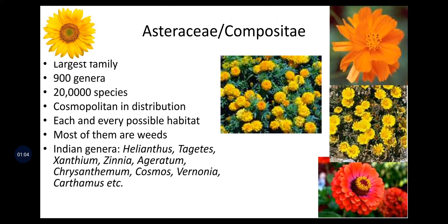It occupies each and every possible habitat. Most of them are weeds. The popular Indian genera are Helianthus, Tagetes, Xanthium, Zinnia, Ageratum, Chrysanthemum, Cosmos, Vernonia, Carthamus, etc.